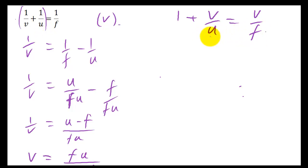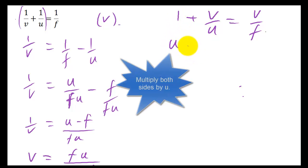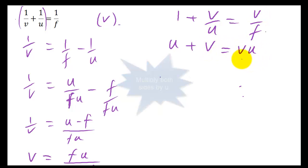Now I'm going to times throughout by U. So 1 times by U gives me U. If I times this by U, that will just cancel with the bottom. And I'm going to times this by U, so it gives me U on the top.